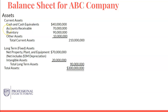Next we have accounts receivable — money that you should be expecting to receive in the future. For example, if customers bought something from you but haven't paid yet, maybe paying within a week or two, that falls under accounts receivable. Next is inventory, which is straightforward — the number recorded when you build or buy your inventory. Other assets is a catch-all line item where miscellaneous items that aren't large enough for individual line items are grouped together.